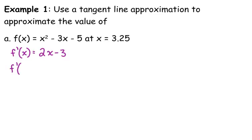So we're going to find the slope of the tangent line at 3. So 2 times 3 is 6, 6 minus 3 is 3. That's the slope of the tangent line.